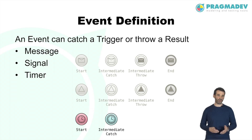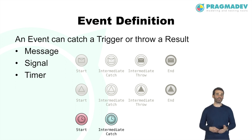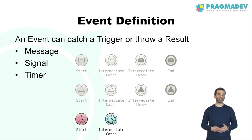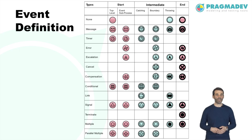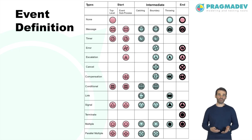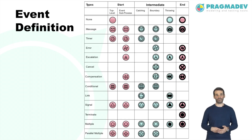Timers are implicitly thrown, meaning there are no throw events for timers. When activated, they wait for a time to elapse before triggering the catch event. A timer can be caught by start and intermediate events. A table shows all available BPMN event definitions and the types of events they apply to.